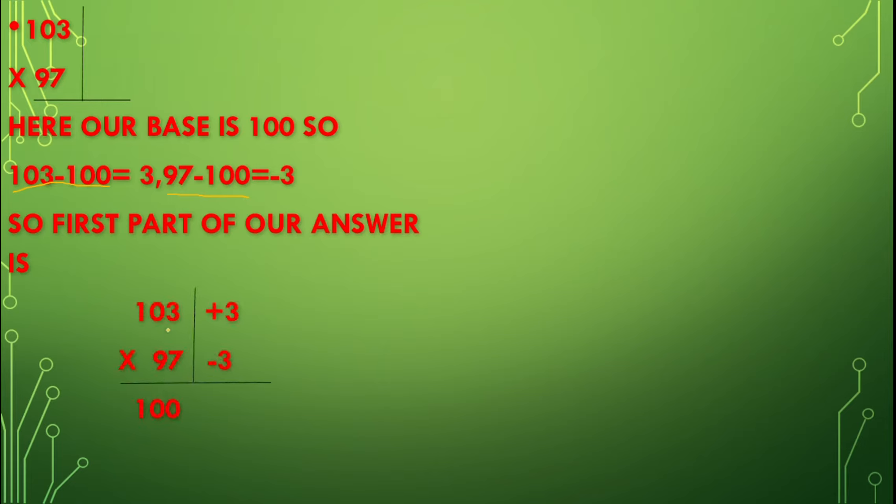100, as 103 minus 3 equals 100, and 97 plus 3 equals 100. Now let's see the second part.